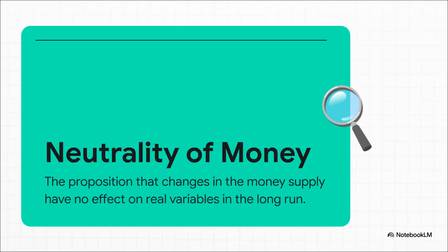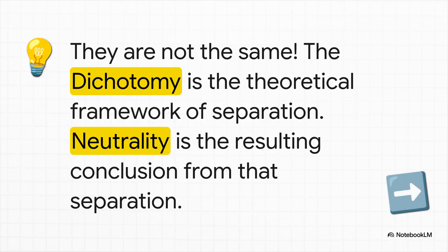So what's the deal with neutrality of money? This is the result — the conclusion that logically follows from the classical dichotomy. If you believe that the real and nominal sides are separate, then it just makes sense that changing the money supply — messing with the numbers on our measuring tape — is not going to change real output. It won't magically create more chairs. In that sense, money is neutral when it comes to the real economy.